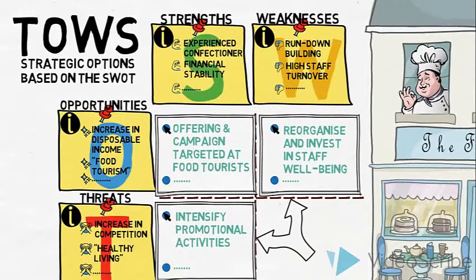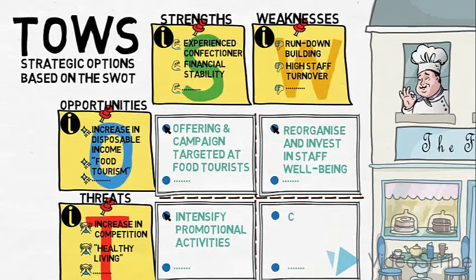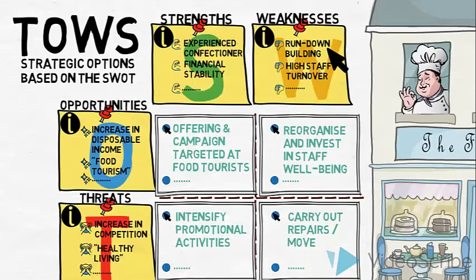Finally, let us look at what options our weaknesses and threats might suggest. We could carry out much needed repairs on the building or even consider moving location. If we are to face the increase in competition and appear attractive to our customers, then it could be necessary to minimize this weakness. Many more strategic options could be generated in a TAOS, but for the purpose of this video we have created just a few to serve as an example.